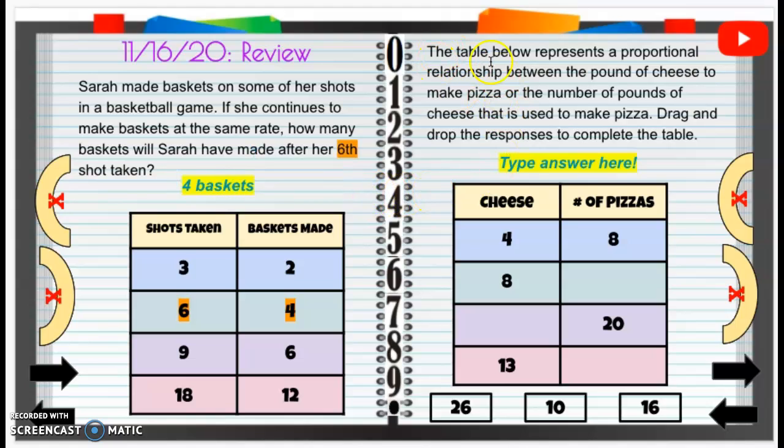All right, let's take a look at the next one. The table below represents a proportional relationship between the pounds of cheese to make pizza or the number of pounds of cheese that is used to make pizza. So drag and drop the responses to complete the table.